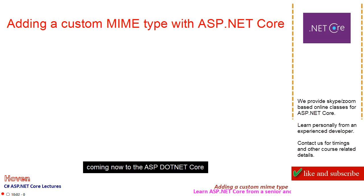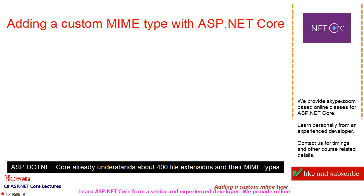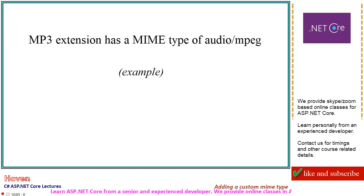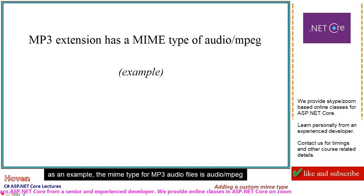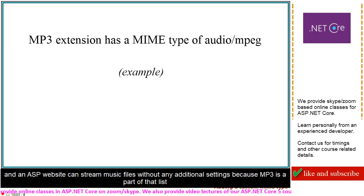Coming now to ASP.NET Core. ASP.NET Core already understands about 400 file extensions and their MIME types. As an example, the MIME type for MP3 audio files is audio/MPEG. An ASP.NET website can stream music files without any additional settings because MP3 is part of that list.